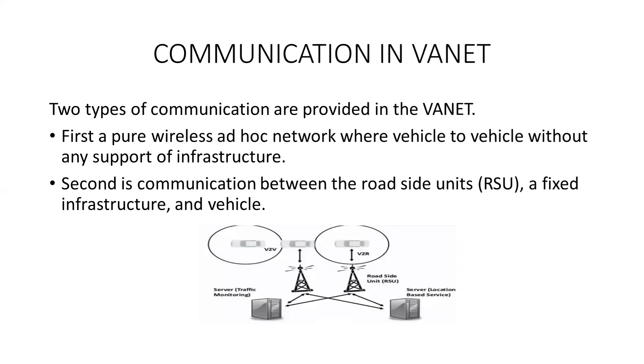Two types of communication are provided in VANET. First, pure wireless ad hoc network communication — vehicle to vehicle — without any support of infrastructure. Second, communication between vehicles and roadside units using infrastructure-based access.